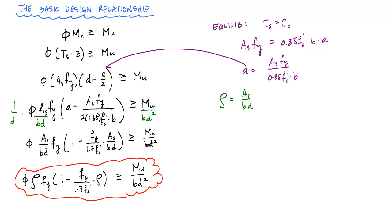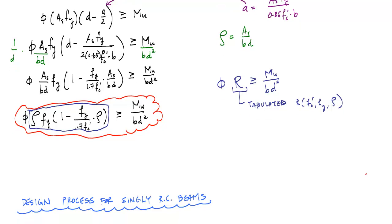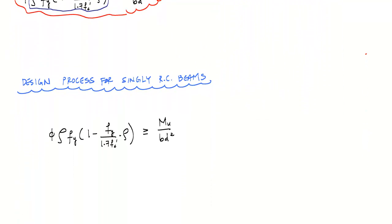So this equation is often the basis of a bunch of design aids in the back of textbooks or different handbooks for designing reinforced concrete beams. And what they do is that instead of this whole term right here, this term is substituted for one single variable, and it's rewritten like this: phi times R greater than or equal to MU over BD squared. So R is used as a generic representation. But R here is tabulated as a function. R is a function of FC prime, FY, and rho as a function of those three variables. But the reality is the design process for singly reinforced concrete beams is centered on this equation. And here I'm going to give you this outline of the process that I follow.